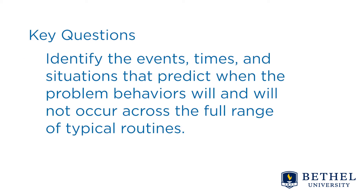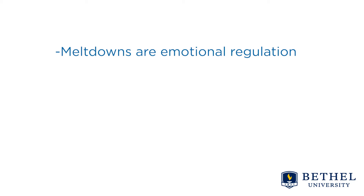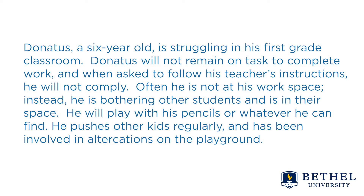This question asks us to identify events, times, and situations that predict when these problem behaviors will and will not occur across the full range of typical routines. We're concerned about task engagement, physical pushing, and meltdowns — which relates to emotional regulation. The pushing reflects impulsivity, and not doing his work may relate to inattention or academic struggle. From this small paragraph, we know he doesn't do okay in music or art, but gym appears to be a setting where he may be on task even during independent-type activities, and we need to sort this out through observations and interviews.